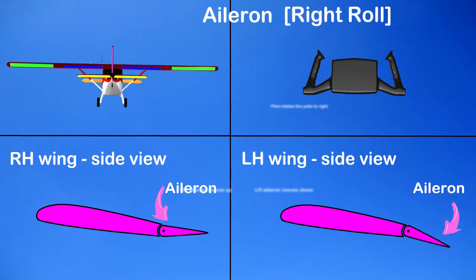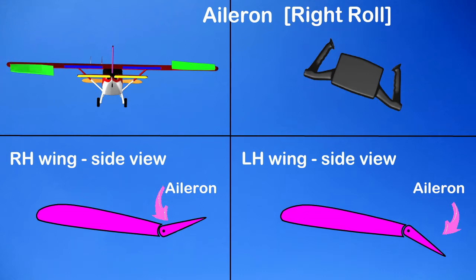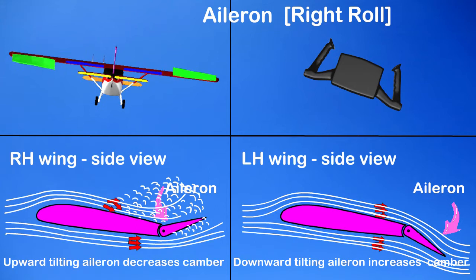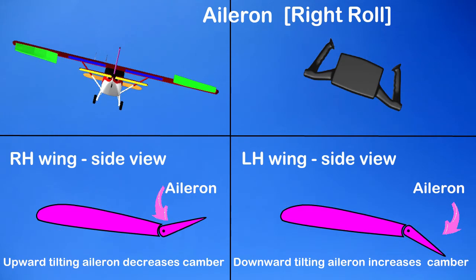Now we will see the right roll. The pilot rotates the yoke to the right. The upward tilting aileron decreases the camber and the downward tilting aileron increases the camber. Thus on the right hand wing the lift is reduced and the drag is increased.